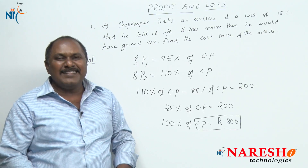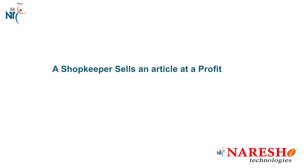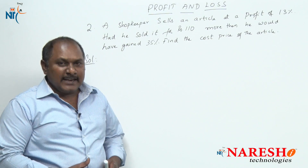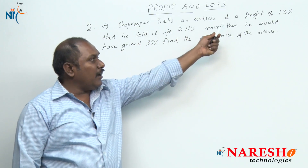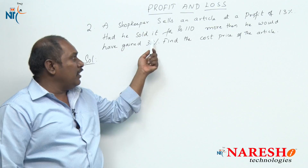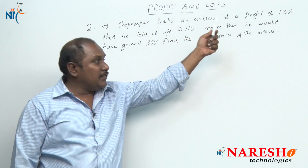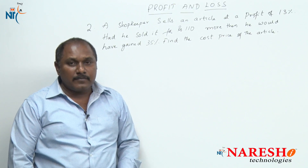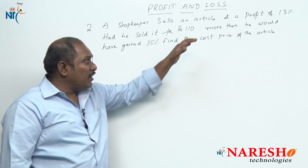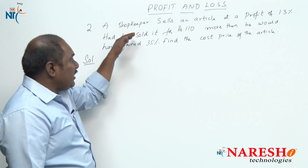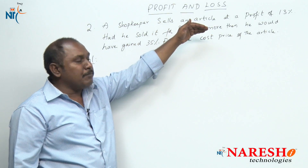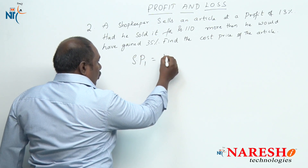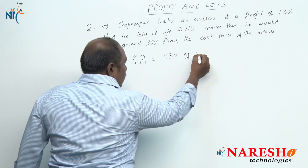Let us look at one more example in the same model. The second problem: a shopkeeper sells an article at a profit of 13 percent. Had he sold it for rupees 110 more, then he would have gained 35 percent. Find the cost price of the article. Here it is the same type of problem, but in both cases there is profit. Initially the selling price would be 113 percent of cost price.